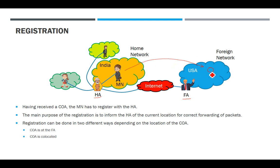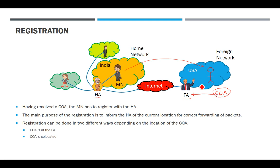After reaching the foreign network, you will get an address called the COA or care of address. The care of address is either maintained by the FA (foreign agent), in which case the term COA is associated with it, or when the COA is maintained by you directly, that is called the co-located address.